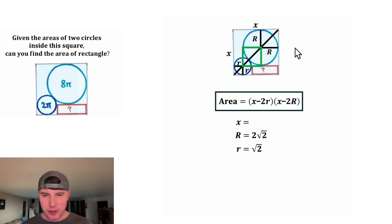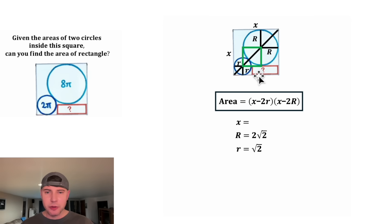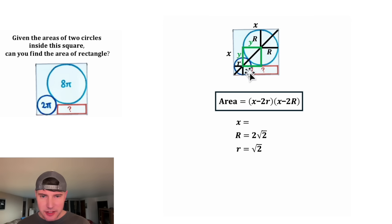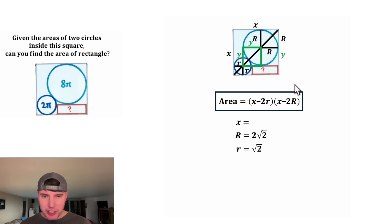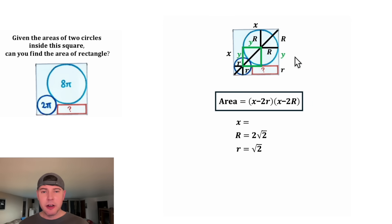And it's even shared with this other green square. Let's focus on the green square. We don't know the side lengths of this green square, so let's call them both Y. This Y completes the height. We can call this portion big R, this portion Y, and this portion little r. So this height X is equal to big R plus Y plus little r.